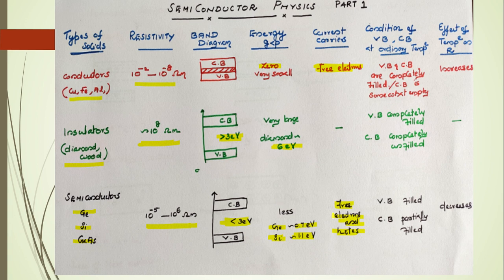In an energy band diagram, free electrons are available in the conduction band and holes are available in the valence band. At room temperature for a conductor, the valence band and conduction band are completely or partially filled. For insulators, the valence band is completely filled but the conduction band is completely unfilled. For semiconductors, the valence band is filled but the conduction band is partially filled.